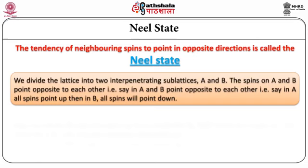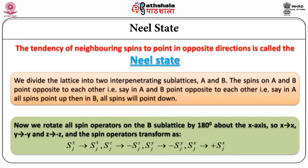Having described the Neel state in terms of two inter-penetrating sub-lattices A and B, we now rotate all spin operators on the B sub-lattice by 180° about the x-axis — simply to make the mathematics simpler. Under this rotation: x → x, y → minus y, z → minus z, and the spin operators transform as S_j⁺ → S_j⁻, S_j⁻ → S_j⁺, S_jz → minus S_jz, S_jy → minus S_jy, while S_jx remains unchanged.